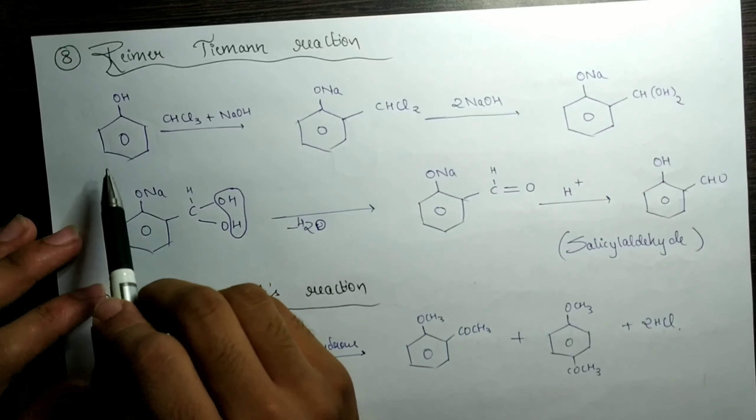If AlCl₃ takes electrons from H₂O instead of Cl⁻, this bond won't be broken. If this bond is not broken, the electrophile is not generated, and hence the reaction will not occur. That is the reason we have to take only anhydrous AlCl₃. Please remember this — it is very very important, especially from a competitive exam point of view.